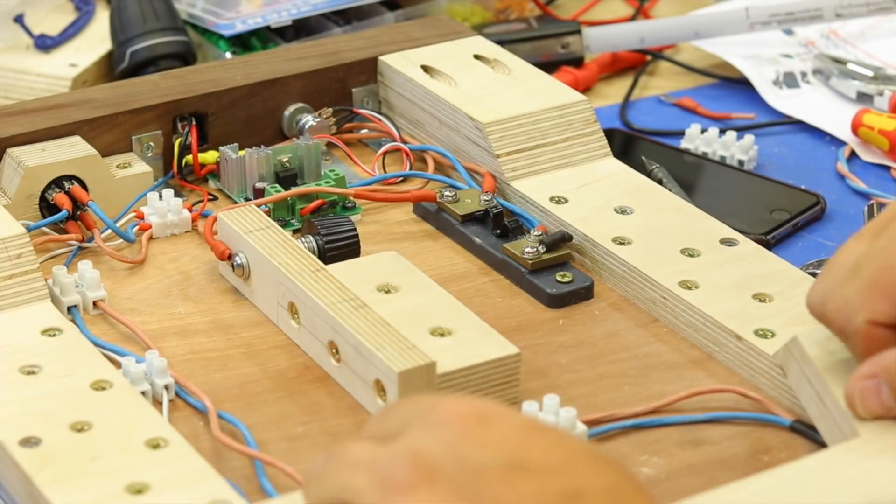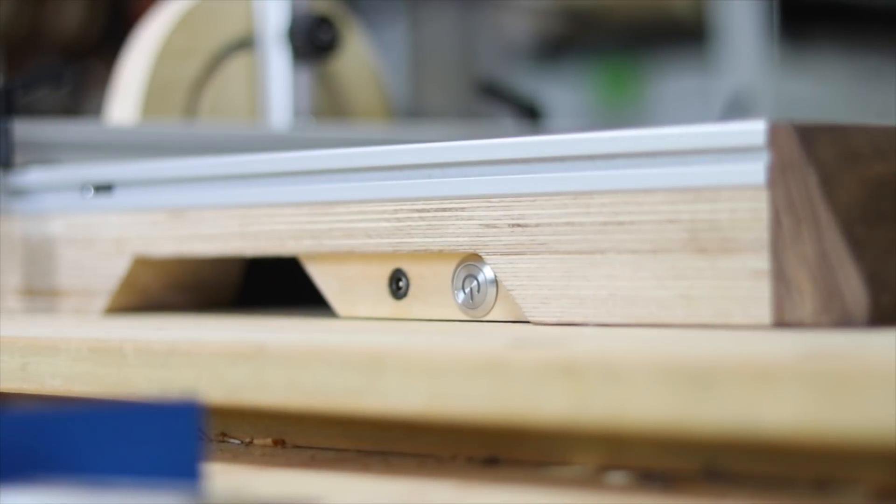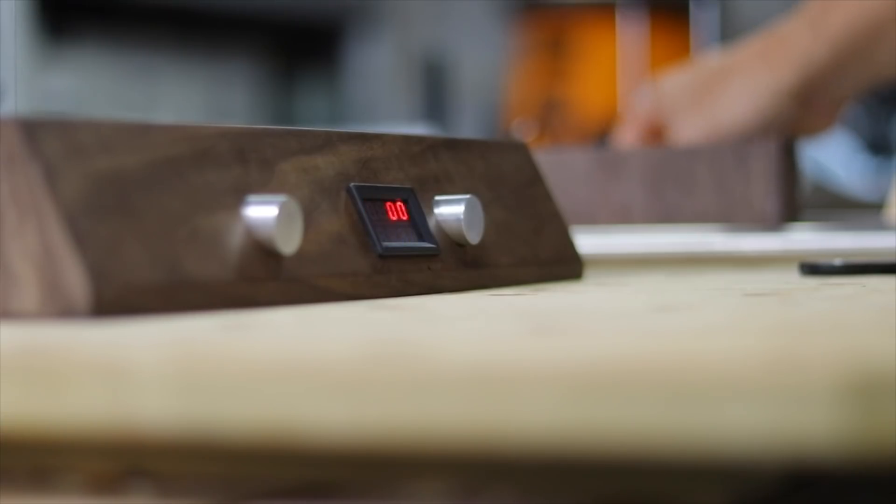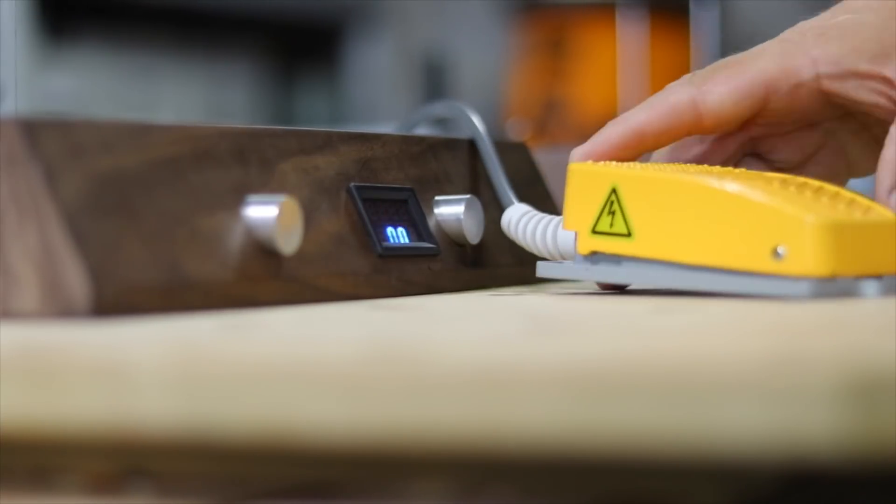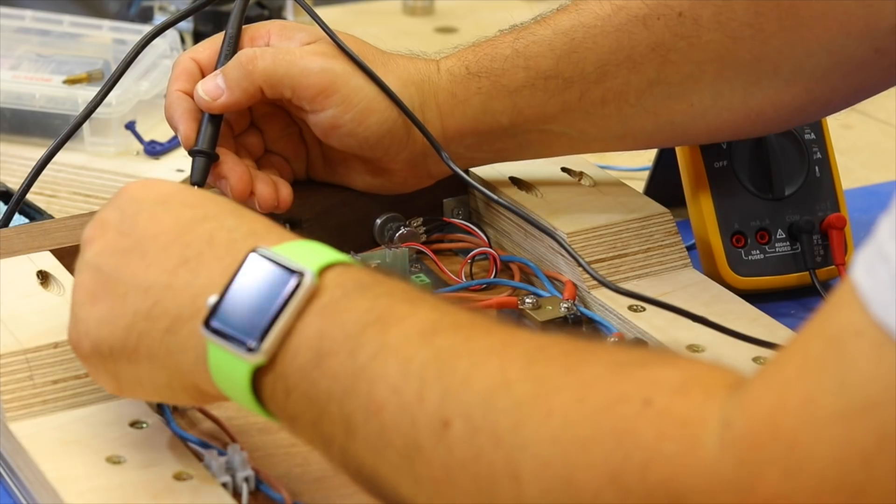A couple of elements you haven't seen me wiring in are the foot pedal and also the port on the side and the power switch for the volt and amp meter. When I show you the electrics diagram at the end and talk through it, it'll make sense.